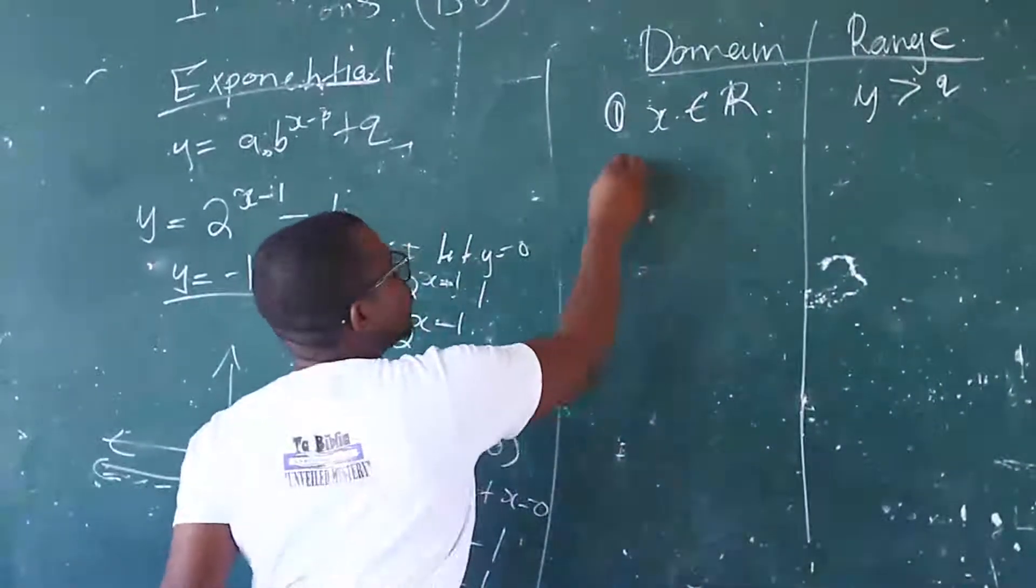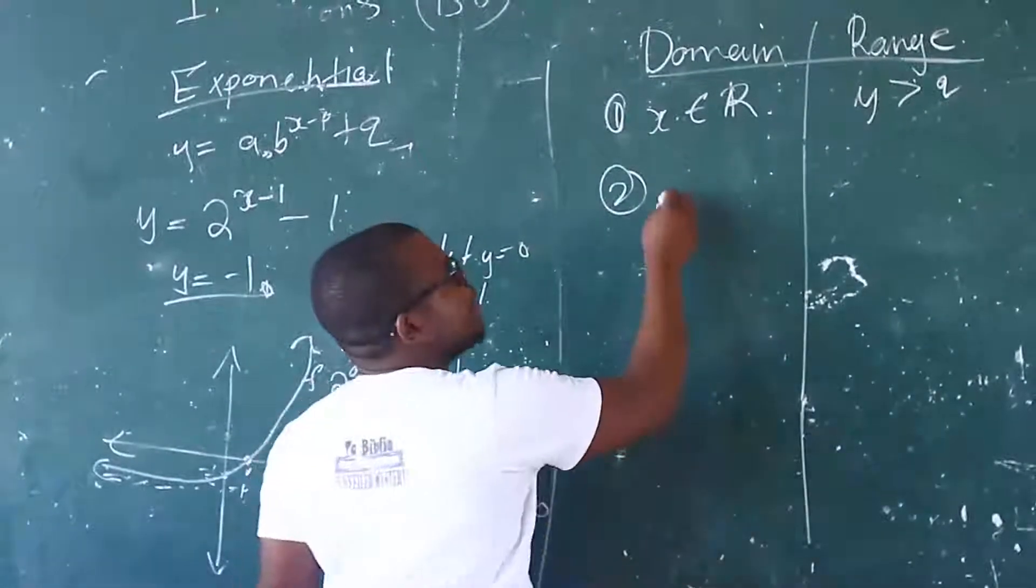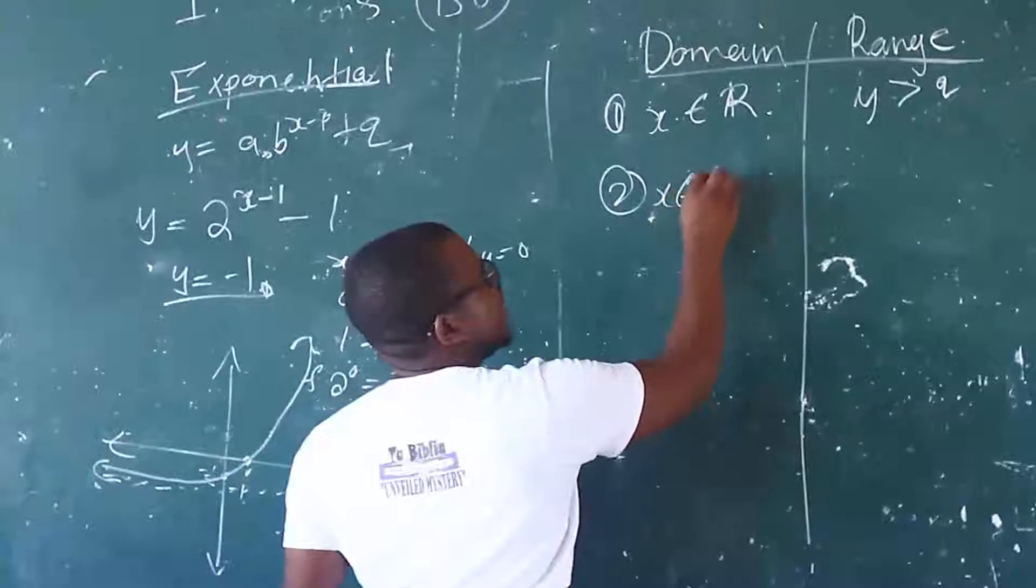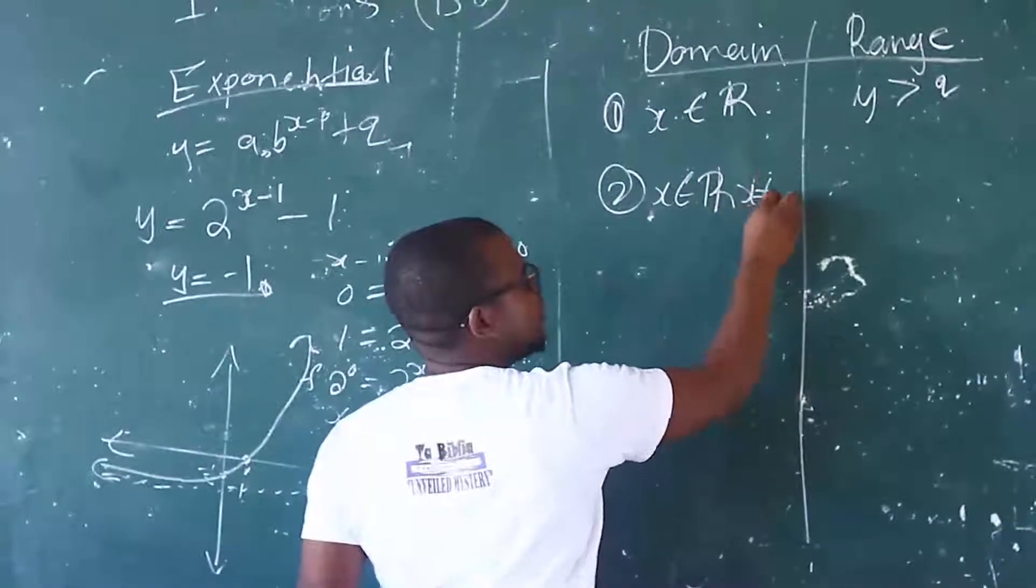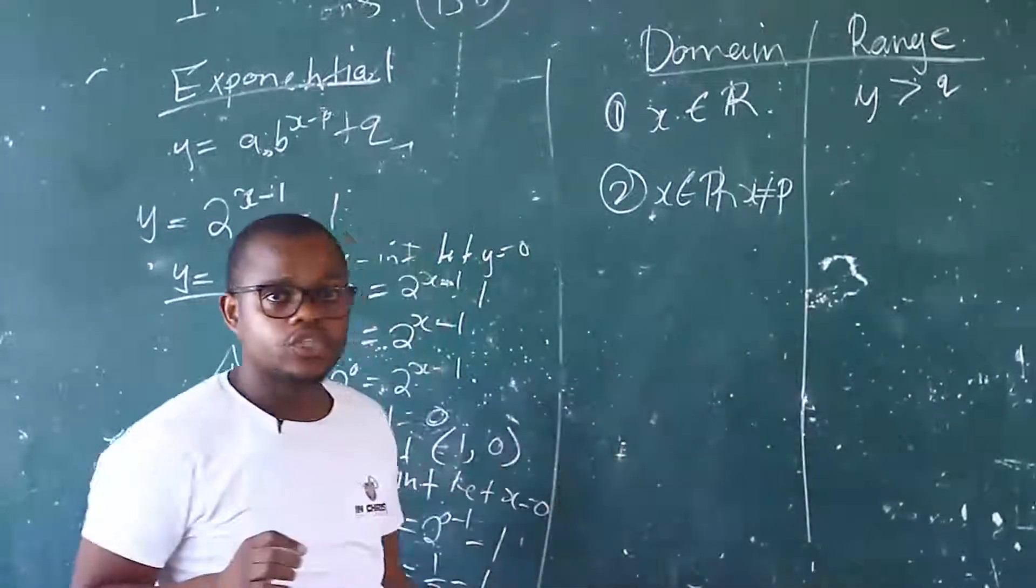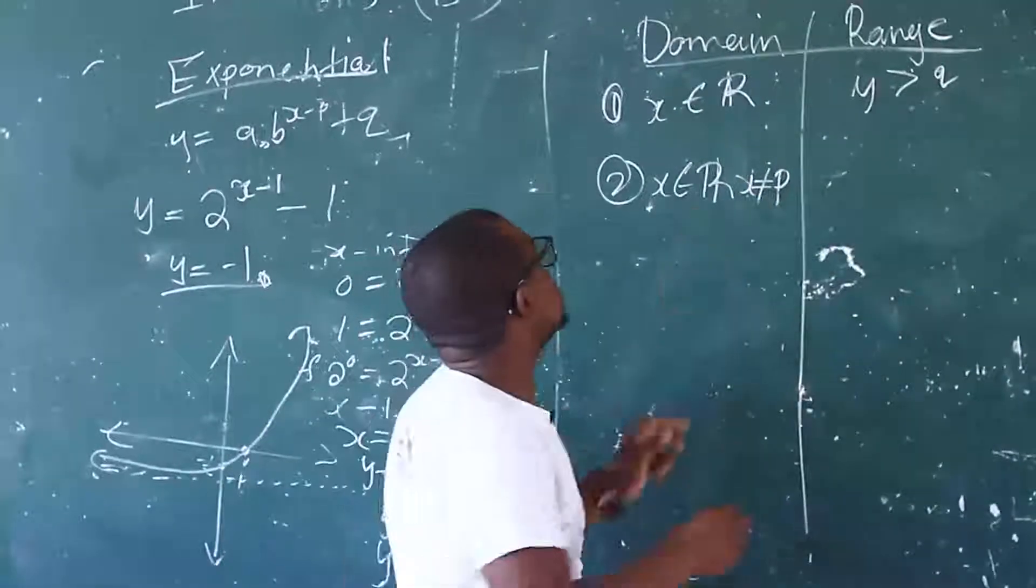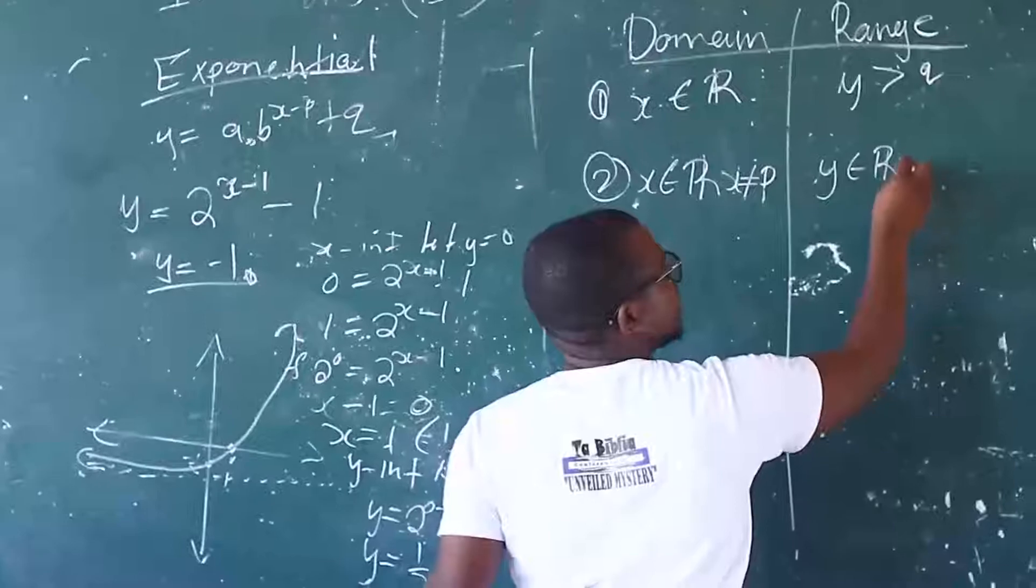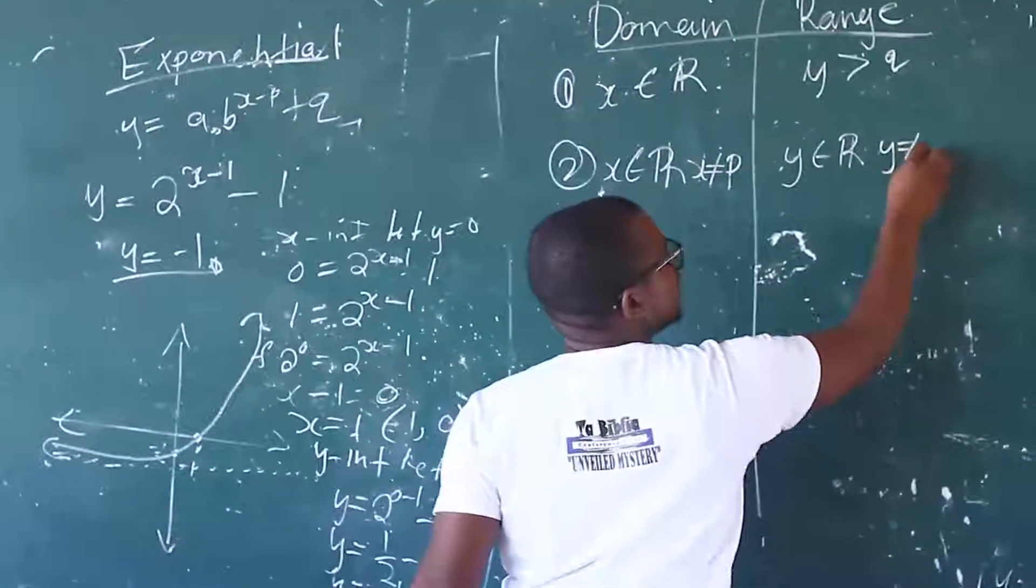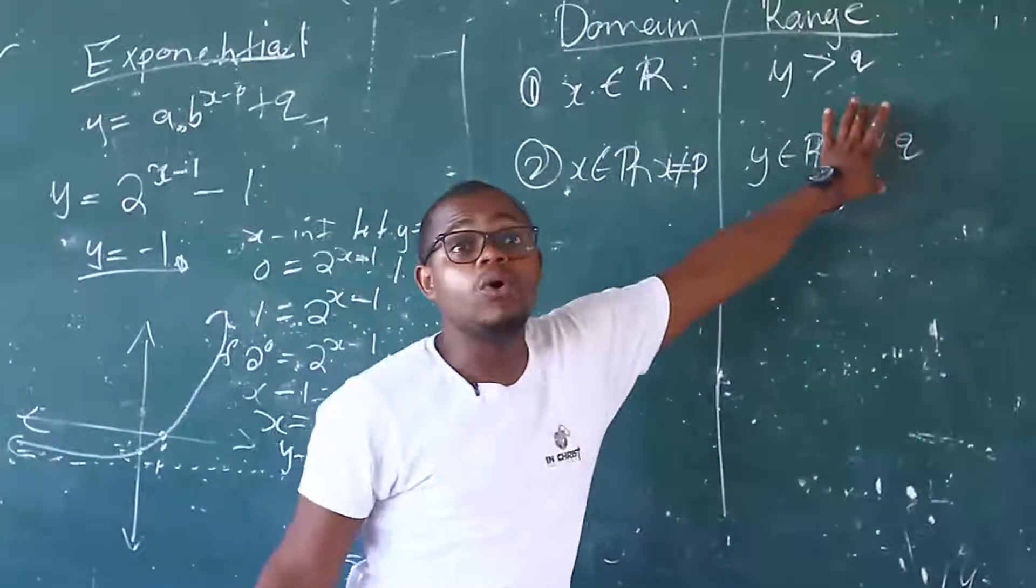Let's move to hyperbola. The hyperbola is, X is an element of real numbers. But X must not be equals to P. So X cannot be equal to P. Okay? And then Y is an element of real numbers. But Y must not be equals to Q.